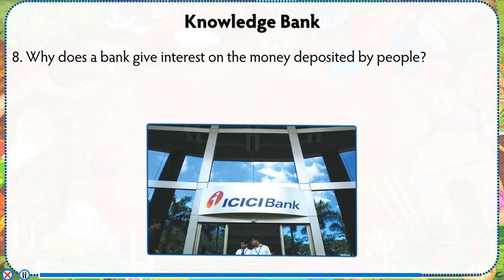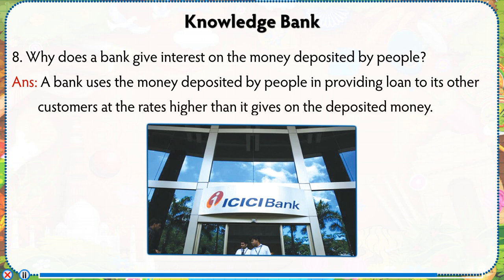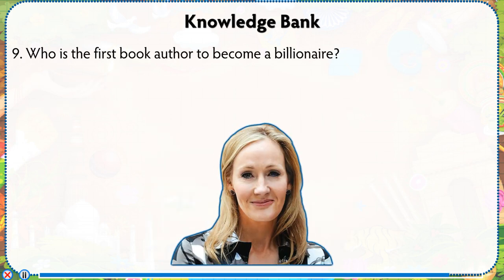Number 8: Why does a bank give interest on the money deposited by people? Answer: A bank uses the money deposited by people in providing loans to its other customers at rates higher than it gives on the deposited money.